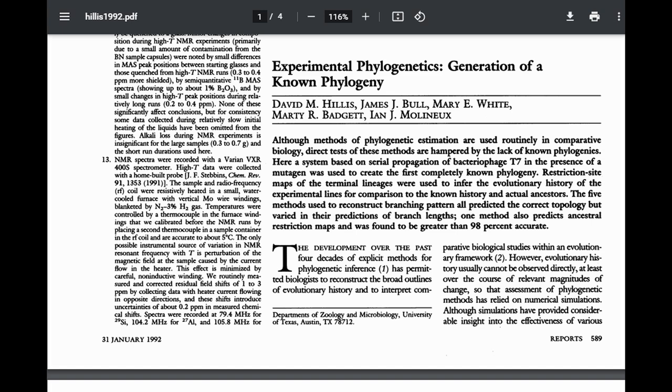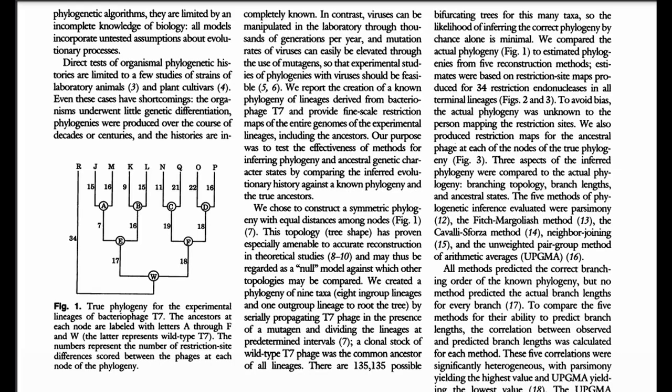Finally, we're going to cover an experiment that demonstrates why phylogenetics is reliable, and not just drawing lines on a page. The 1992 paper, Experimental Phylogenetics, Generation of a Known Phylogeny, describes how researchers took a clonal population of T7 bacteriophages, node W, and split it. The two populations, leading to nodes E and F, were allowed to undergo multiple generations while in the presence of a mutagen. After an equal length of time, the two populations were manually split again, leading to nodes A, B, C, and D, and allowed to continue reproducing in the presence of the mutagen. After another equal length of time, the four populations were split a final time and allowed to propagate.